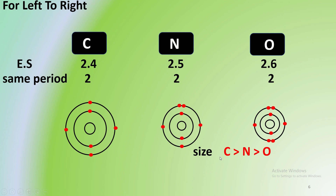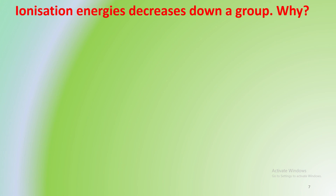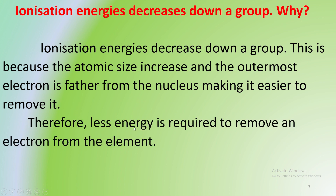Oxygen, carbon, and nitrogen each have different ionization energies. The electron and nucleus interaction determines the energy needed. The electron on one side and the nucleus on the other — the nucleus is a very large source of energy. Therefore, less energy is needed to remove an electron that has a smaller effect.